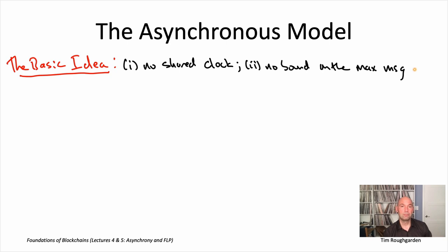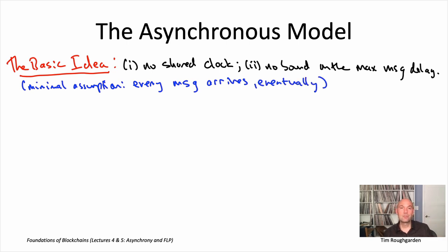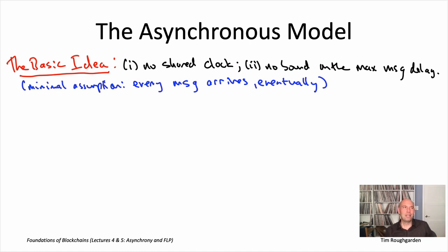Message delays can be arbitrarily large. The minimal assumption we're going to need to make for the model to be interesting is that a message, whenever it's sent, is eventually going to be delivered. So the delay is finite, but with no upper bound on how big that finite number is. Because if we didn't make this assumption, messages might never arrive at all, and impossibility becomes obvious — if you're trying to do state machine replication, you can't have liveness if you never receive any transactions from clients.